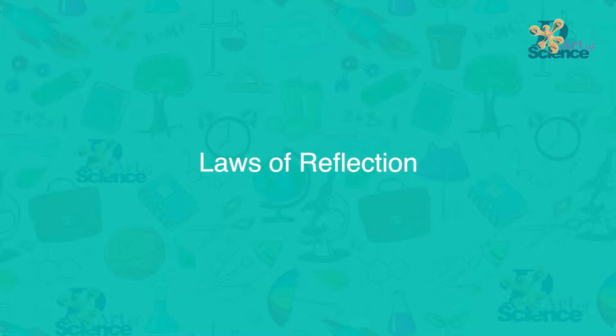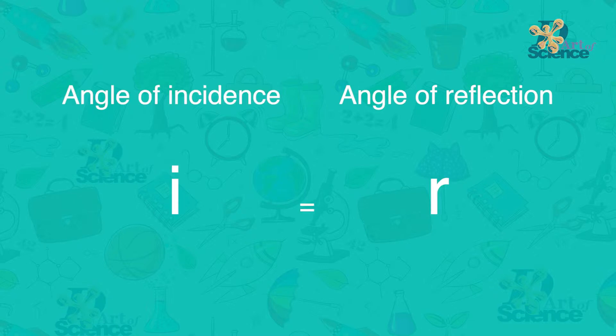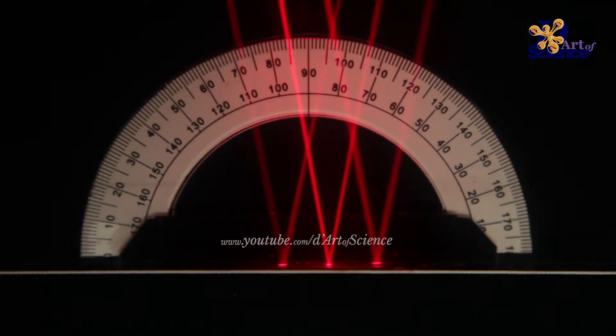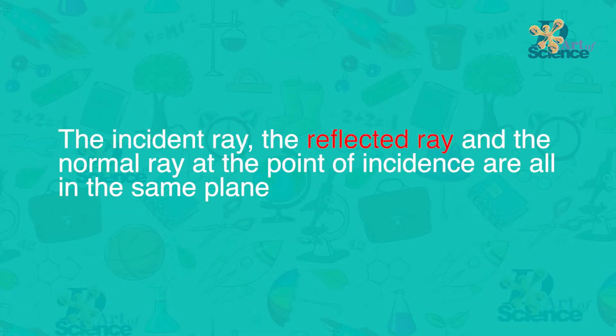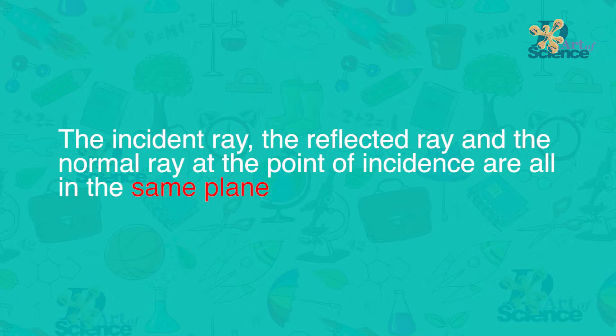So not only did the angles look the same — they were technically perfectly equal. However, if you do the experiment with a regular mirror, chances are it will not be a technically perfect experiment, and I will explain why as part of the TIY project at the end of the lesson. Laws of reflection: the first one is i = r. The angle of incidence i is always equal to the angle of reflection r. This will be true of multiple reflections as well. Another law of reflection: the incident ray, the reflected ray, and the normal ray at the point of incidence are all in the same plane.